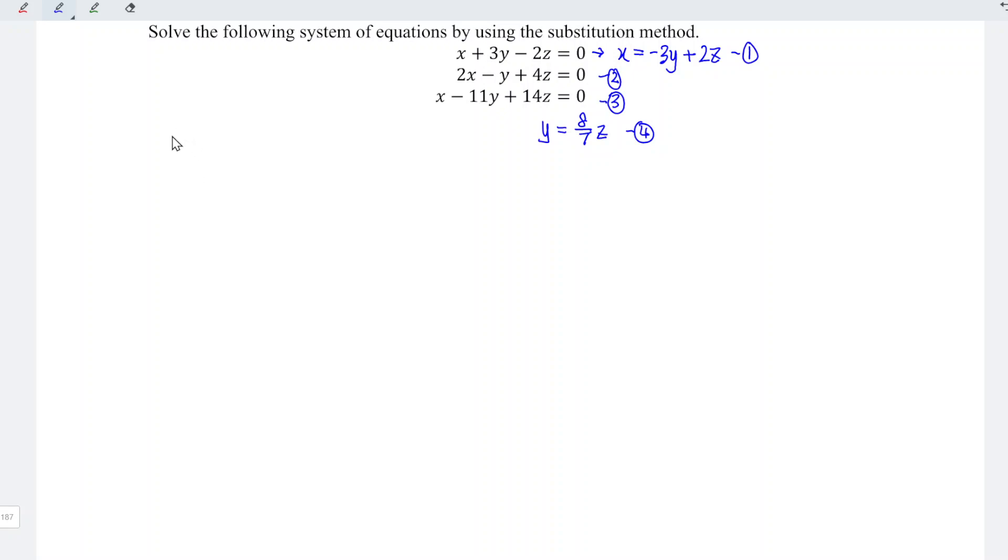Now, let's substitute equation 4 into equation 1. So we have x is equal to minus 3y, minus 3y is equal to 8 over 7z, and we plus 2z, which means that x is equal to minus 3 times 8, which is minus 24, and we have over 7z plus 2z.